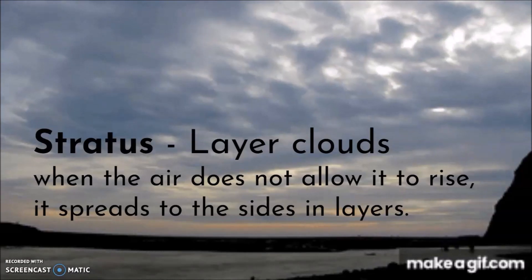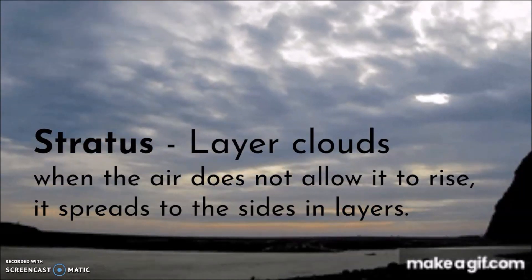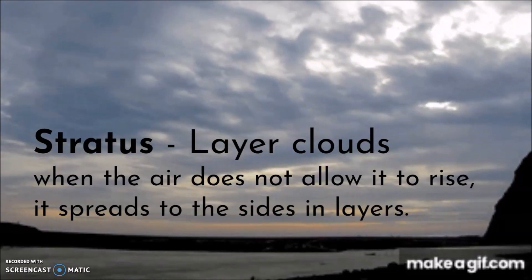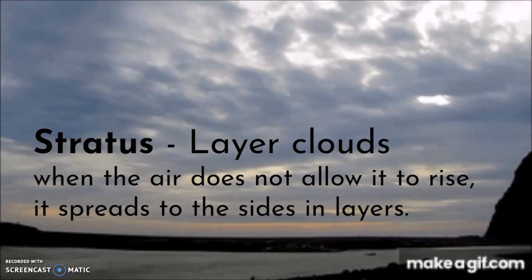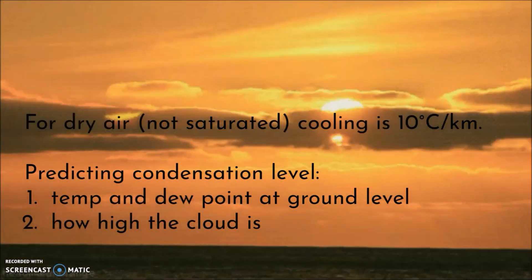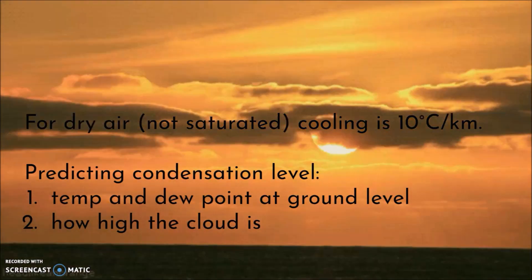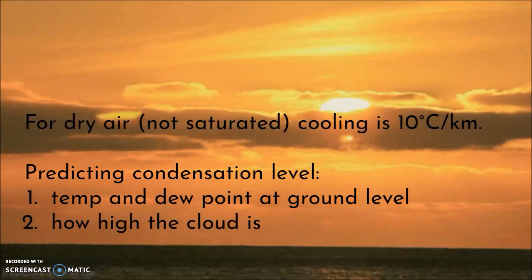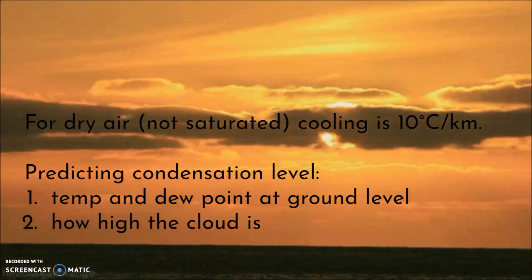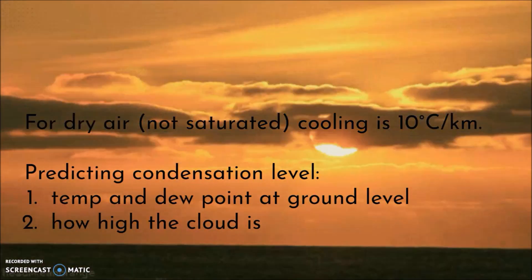Another type of cloud is called a stratus. Sometimes the air doesn't allow clouds to rise upwards because of air pressure, so it spreads sideways. We'll talk about air pressure in a later lesson. Scientists can predict the condensation level because as air rises, it cools about 10 degrees Celsius per kilometer. Based on the temperature and dew point at ground level and how high the cloud is, scientists can figure out at which point the condensation level occurs.